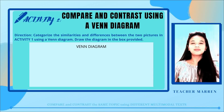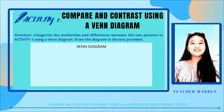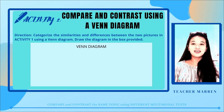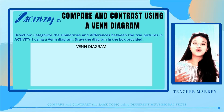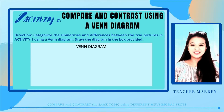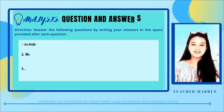For the second activity, you are going to compare and contrast using a Venn diagram. Categorize the similarities and differences between the two pictures from Activity 1. Draw the Venn diagram in the box provided in your worksheet.